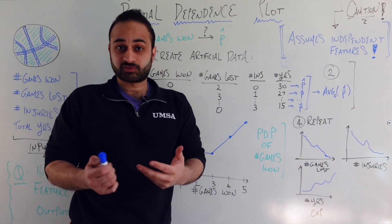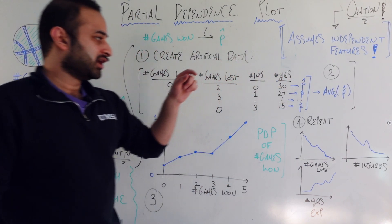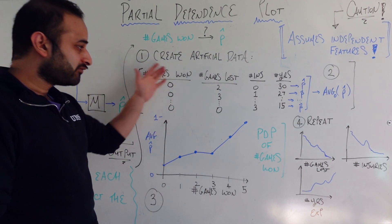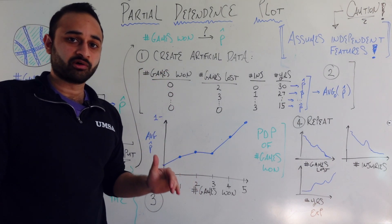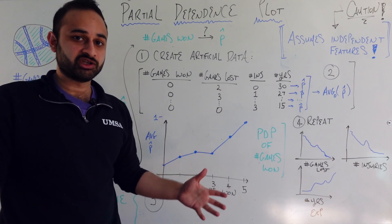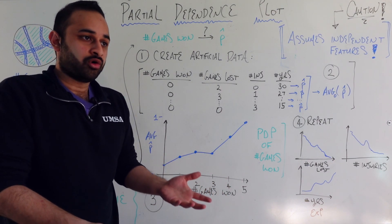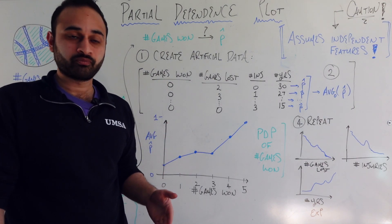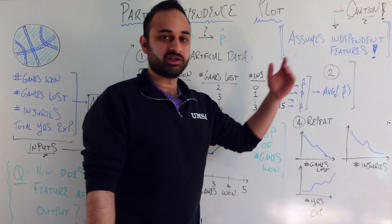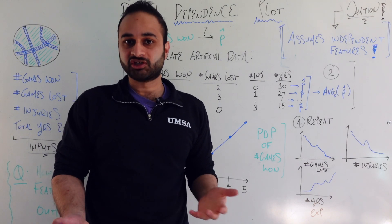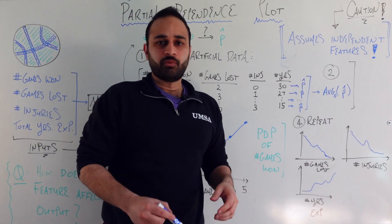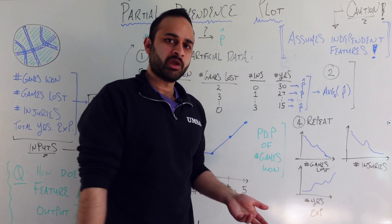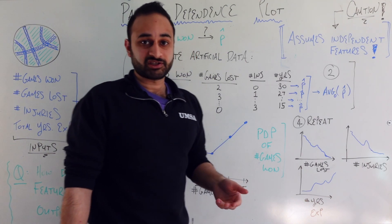That average number represents: on average, what is the predicted probability of winning your next basketball game if you have zero games won so far? We look at the whole dataset and consider every sample as having zero games won — basically asking, in a population of teams who haven't won any games, what is the average predicted probability? It's probably fairly low, since we don't have much evidence the team will win.